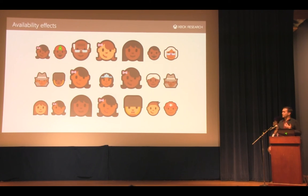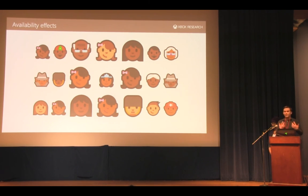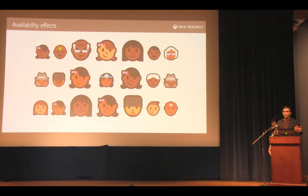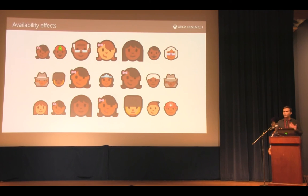Going through that list of availability biases that can show up in research, for an individual study there are often very good reasons to restrict participation because of the study's focus. But doing that thoughtlessly can mean your collection of research has a cumulative effect where you're hearing much more from certain kinds of players than others. And the access you have to players' voices can look a lot like that availability bias-influenced access we talked about for game developers — voices reaching you much more often than others — which is exactly what we, as researchers, are trying to combat.